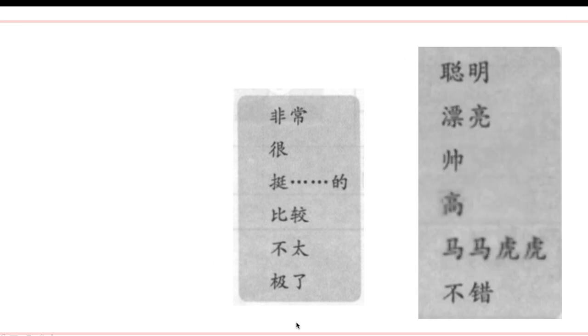Okay, that's all about the dialogue. Now it's your time to practice oral speaking. Look at this. In this column, we can find the adverbs we have learned: 非常 — extremely, 很 — very, 挺…的 — quite, 比较 — a little, 不太 — not very, 极了 — extremely. And in this column, we have adjectives like 聪明 — clever, 漂亮 — beautiful, 帅 — handsome, 高 — tall, 马马虎虎, and 不错.